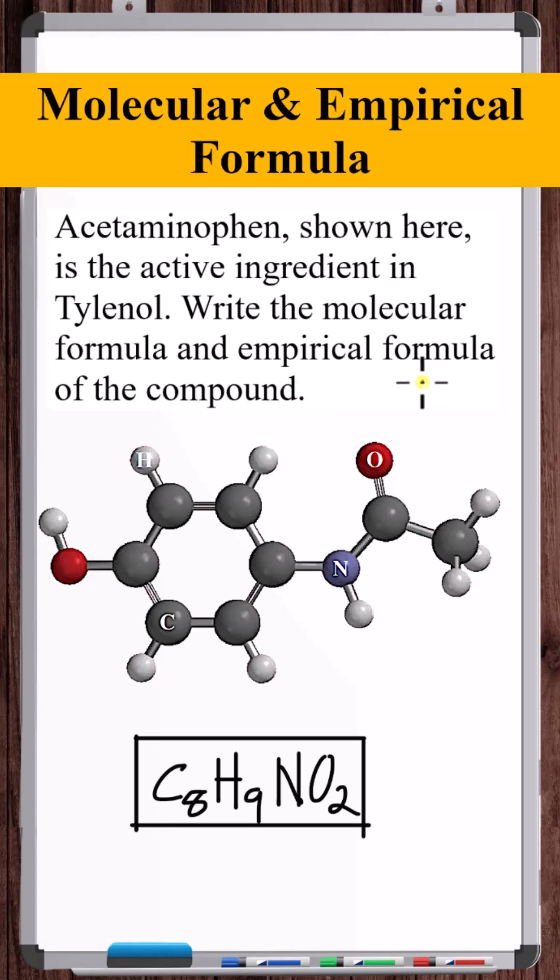What about the empirical formula? The empirical formula is strictly showing you the ratios of the different atoms present in any substance, not just molecular. To get the empirical formula of acetaminophen from the molecular formula, which we have, we would just simplify the subscripts to the simplest or smallest whole number values.